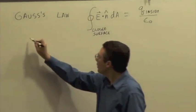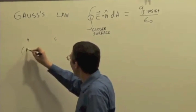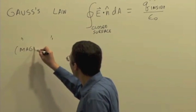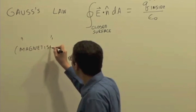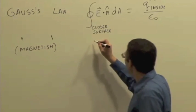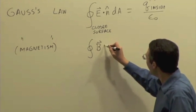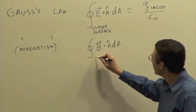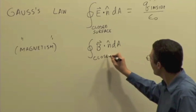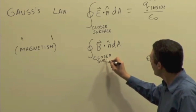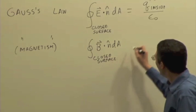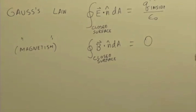We saw Gauss's law for magnetism, which says that the magnetic flux over a closed surface was equal to zero. Okay, so there's no magnetic monopoles, this is telling us.